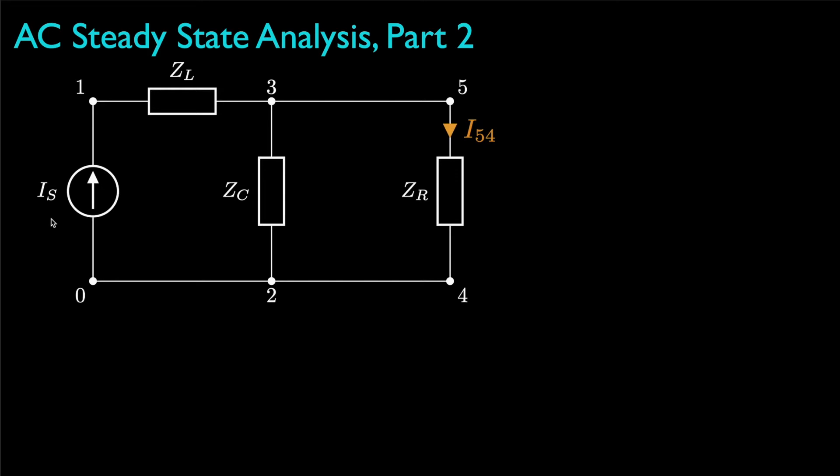Now if we wanted to know the current flowing from node 5 to node 4, we could note that the current from the source splits between the capacitor and the resistor, and then use the current divider relationship to determine how much of the current splits to flow through the resistor. Then using this current, we could evaluate the voltage drop from node 5 to node 4 by using the Ohm's law type relationship for impedances.